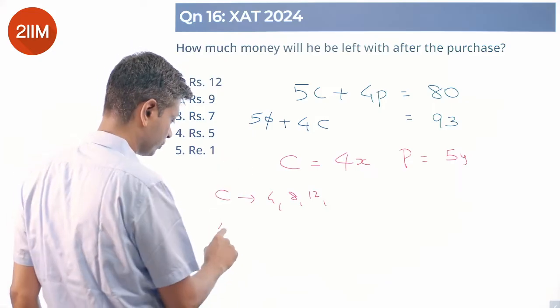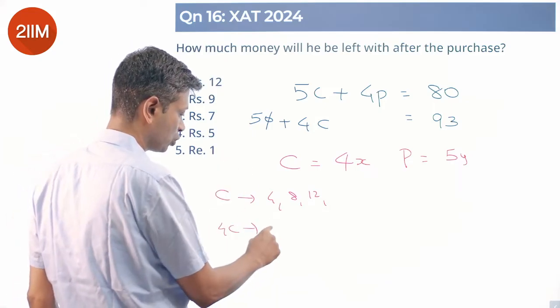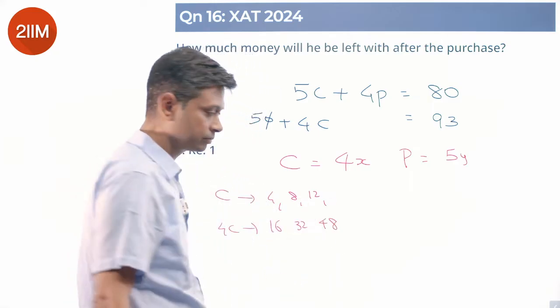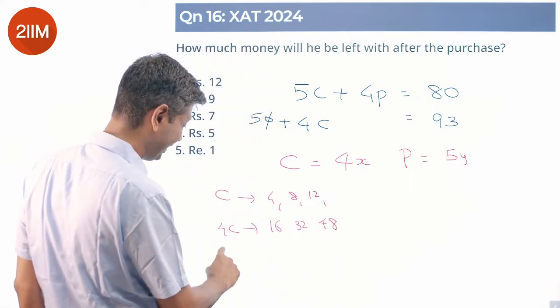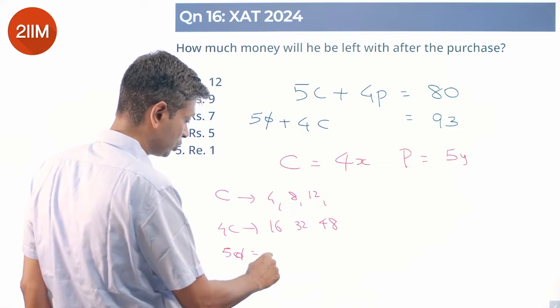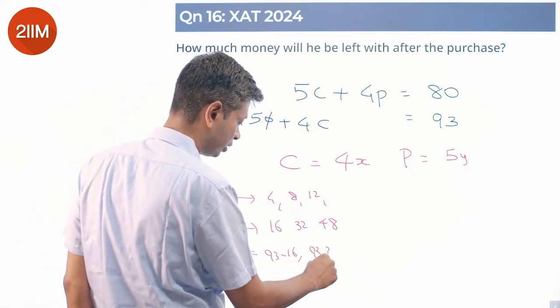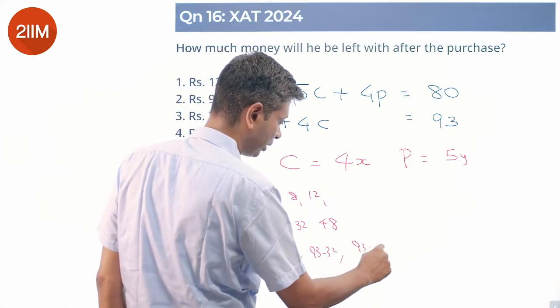So 4C can be 4 into 4, 16; 8 into 4, 32; 12 into 4, 48. So 5 times onion could be 93 minus 16, 93 minus 32, or 93 minus 48.